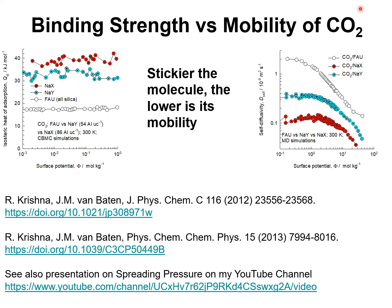This is to be expected because of the large quadrupole moment of CO2. However, stronger binding implies lower mobility, and we note from the plot of self-diffusivity versus surface potential that the mobilities decrease with increasing number of extra-framework cations, as we move from all-silica faujasite to NaY to NaX. The takeaway message from this slide is that the stickier the molecule, the lower is its mobility.